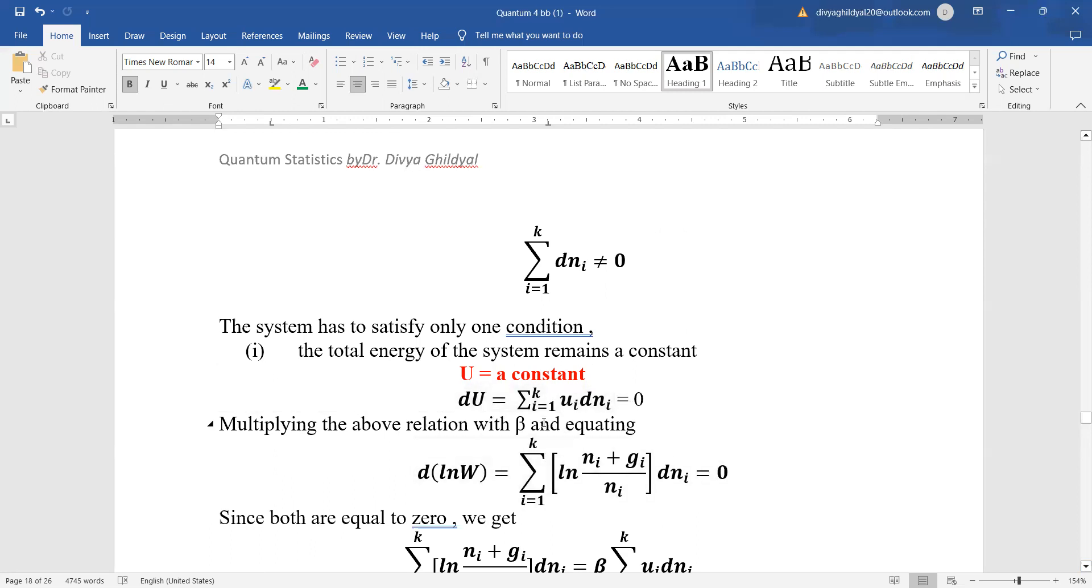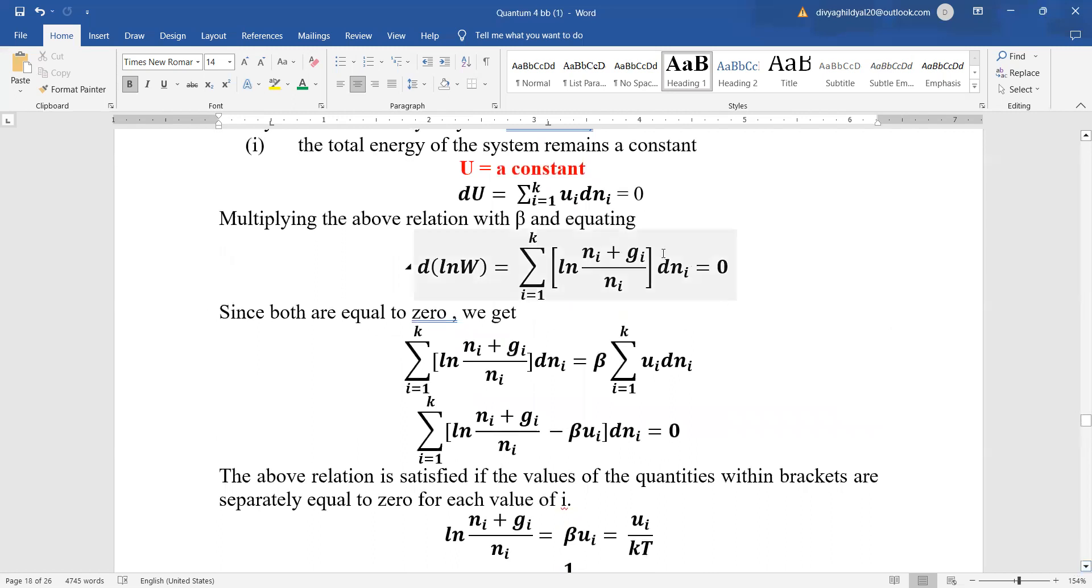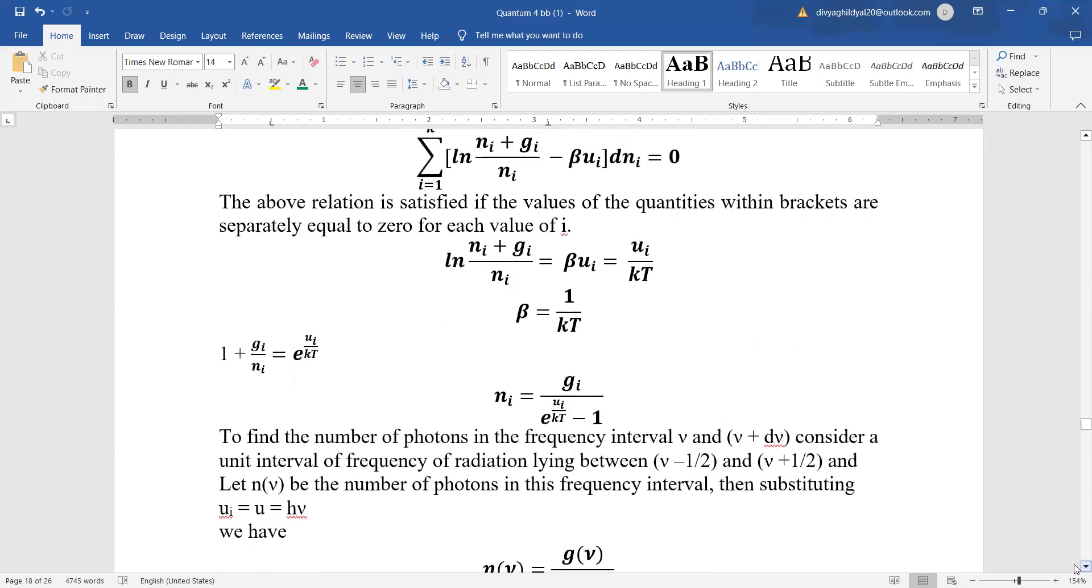We will multiply this equation with beta and equate the probability coefficient to 0, because u is constant so its variation is 0. Since both are equal to 0, we can equate this to d(u_i) equals ni dni. The above relation is satisfied if the quantities within the brackets are separately equal to 0 for each value of i, and we get the constant beta equals 1 upon kT.